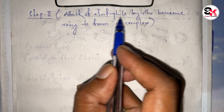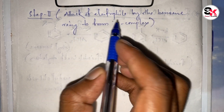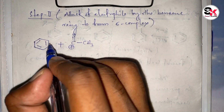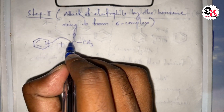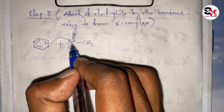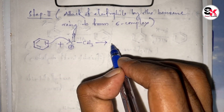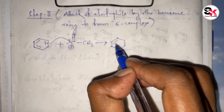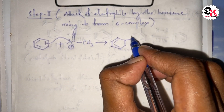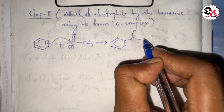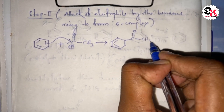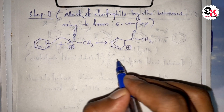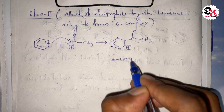Step two is the attack of the electrophile by the benzene ring to form a sigma complex. Benzene reacts with the acylium ion electrophile formed in the first step to form a sigma complex, which is resonance stabilized.